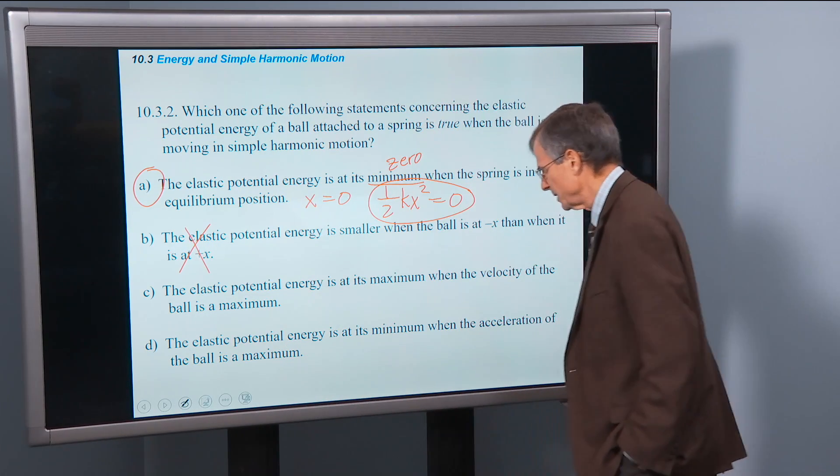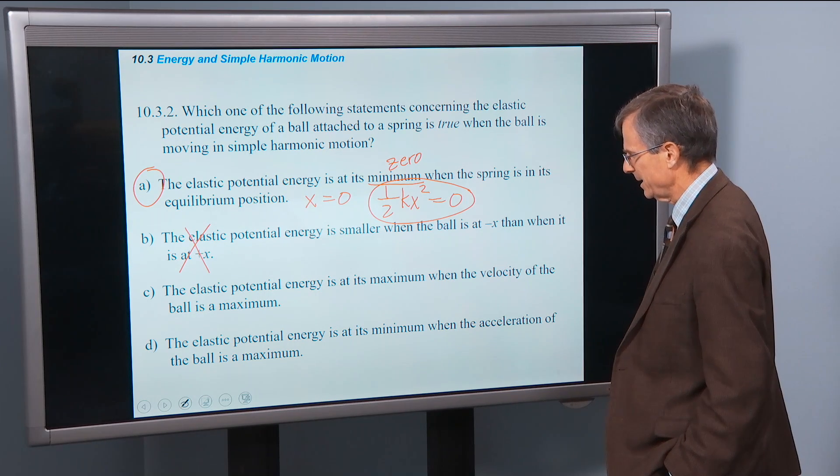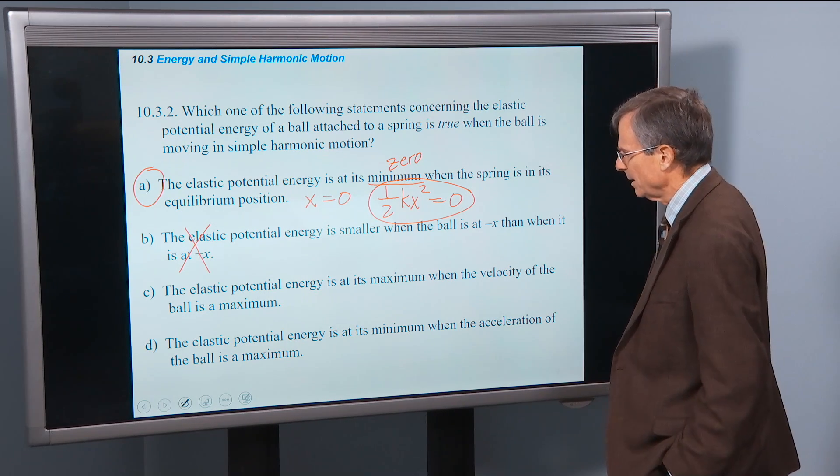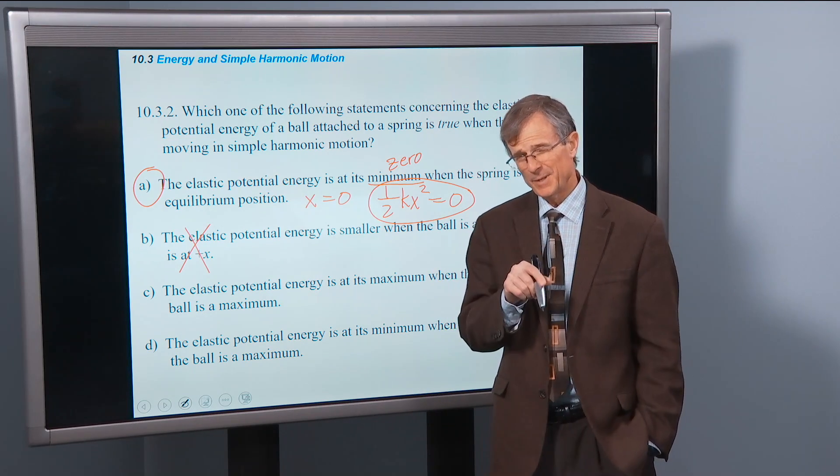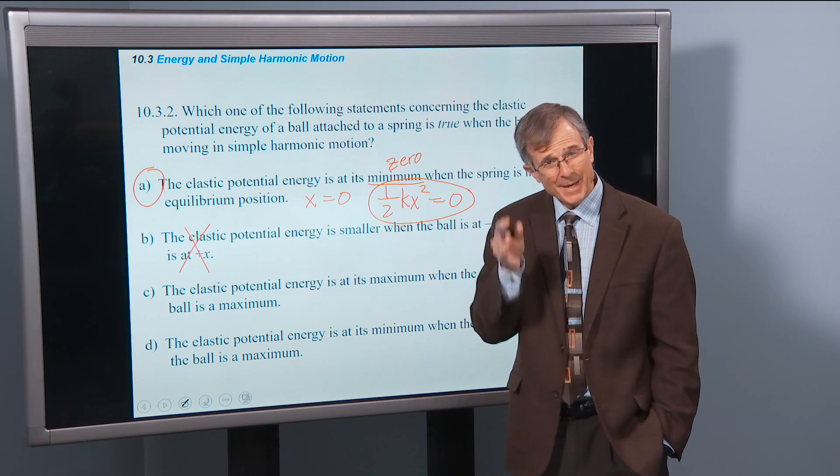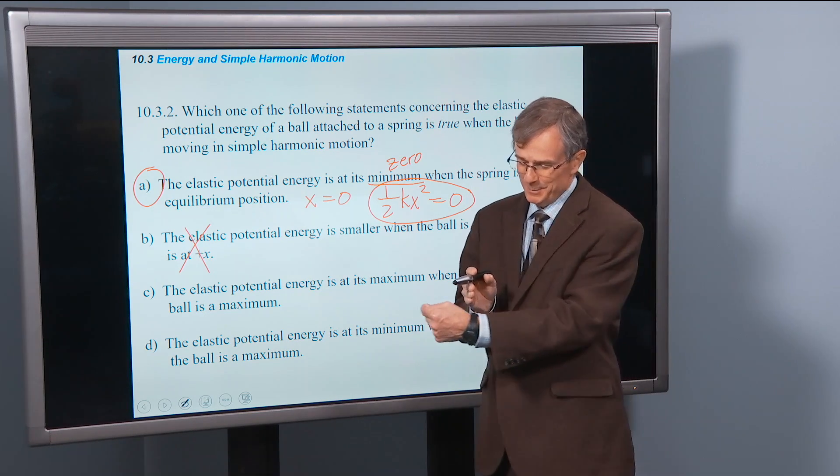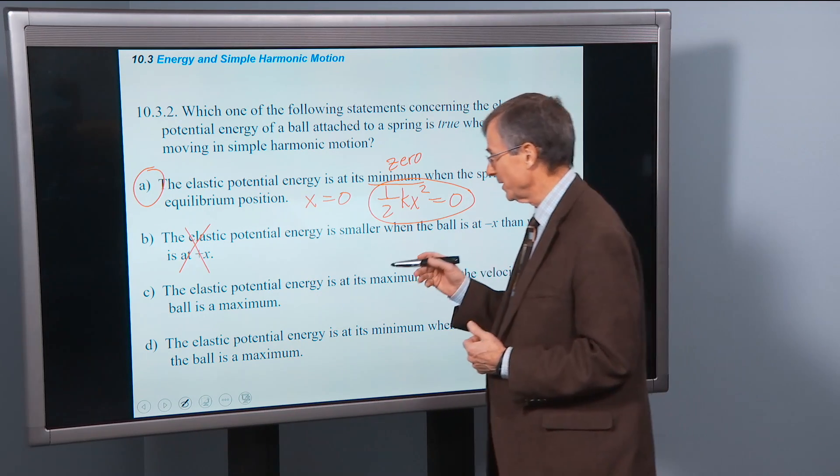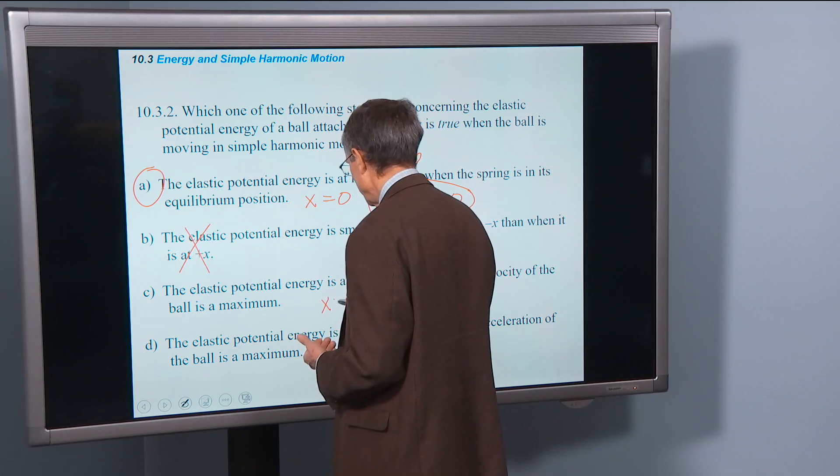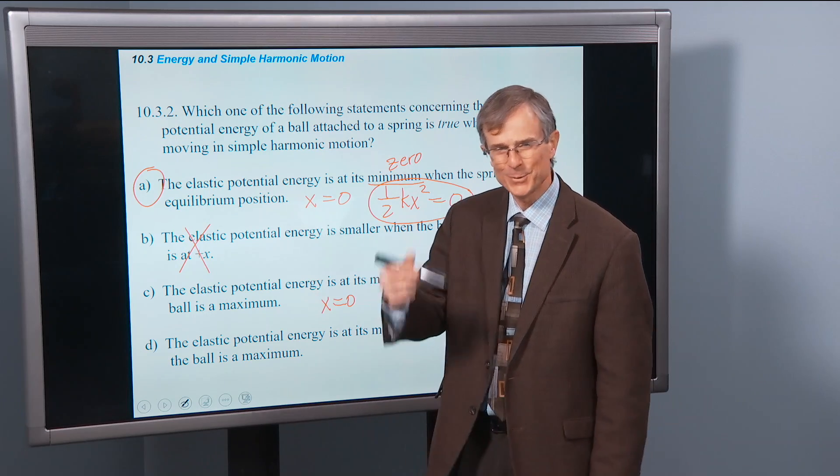The elastic potential energy is at its maximum when the velocity of the ball is a maximum. Well, the velocity is at a maximum when it passes that equilibrium position. So, and that's x equals zero.